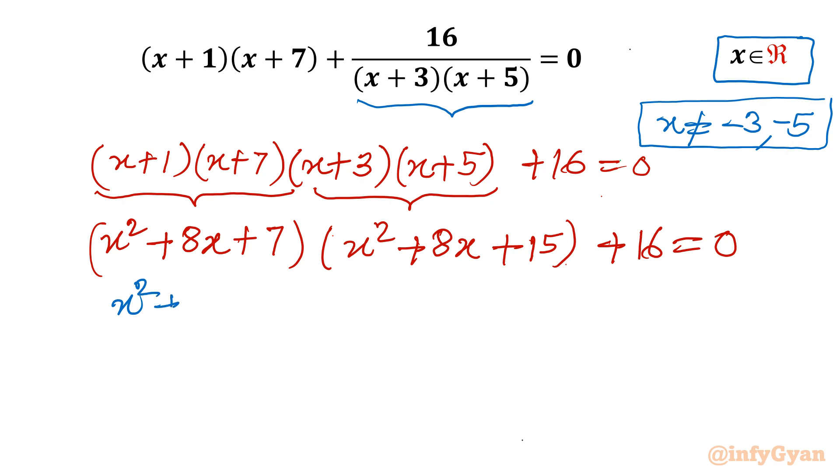So I can write x square plus 8x, the 7 I can write as 11 minus 4 and this 15 I will write as 11 plus 4. Without giving substitution you can use this method also. So now you can see x square plus 8x plus 11, a plus b, a minus b. So difference of two squares we used to write.